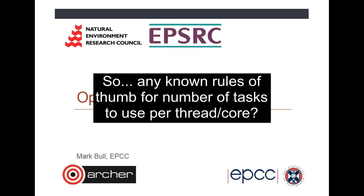Q: Any rules of thumb for number of tasks to use per thread or core? A: That's difficult because it depends on variability in task execution time. If tasks take much the same time, maybe 5 to 10 times the number of threads will work. The greater the variability in task execution time, the more tasks you need to ensure all threads stay busy. If some tasks take a hundred times longer than others, you'll need many hundreds of small tasks to balance with the large ones. There isn't really a single rule of thumb — it's application dependent.